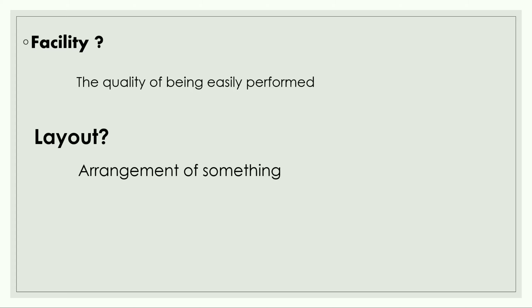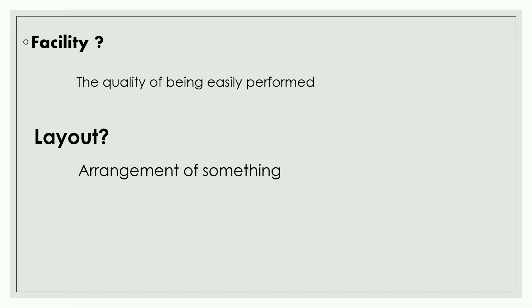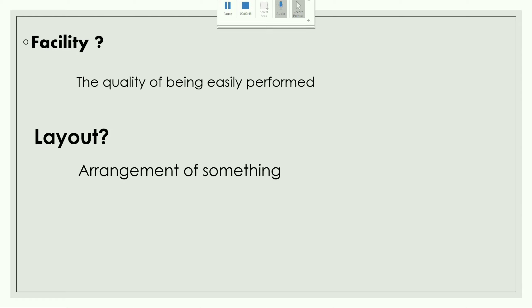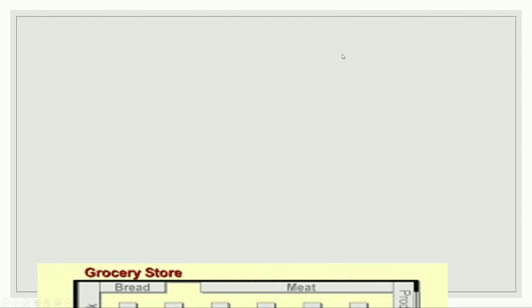For an organization to have an effective and efficient manufacturing unit, it is important that special attention is given to facility layout. Facility layout is an arrangement of different aspects of manufacturing in an appropriate manner so as to achieve desired production results. In normal terms, it is an arrangement of all machines and equipment.